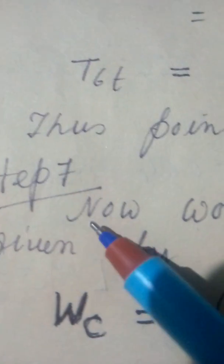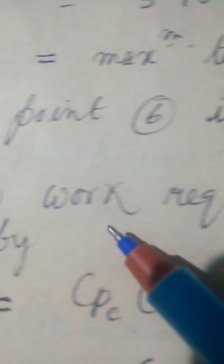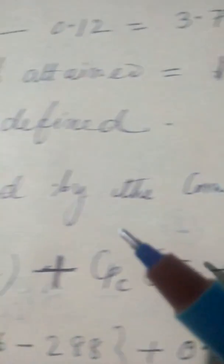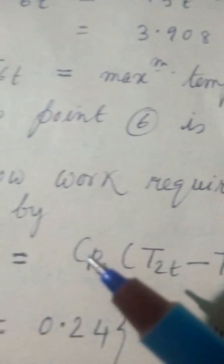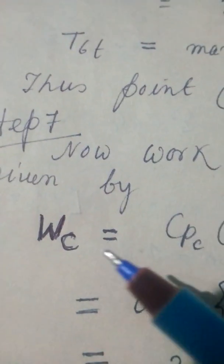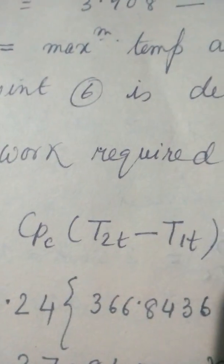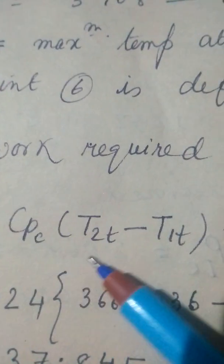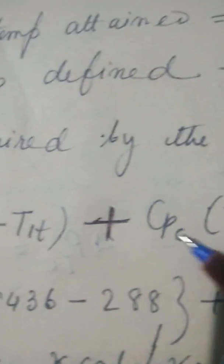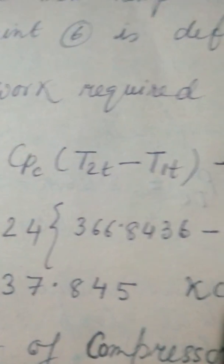Step 7. Now work required by the compressors, the two compressors WC is given by WC is equal to, this is very simple, this is the part compressor. CPC into T2T, this is the first and this is the second compressor. So total is added. This is actually negative work on the system.